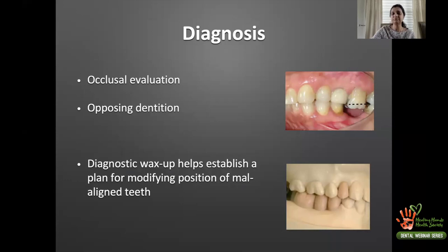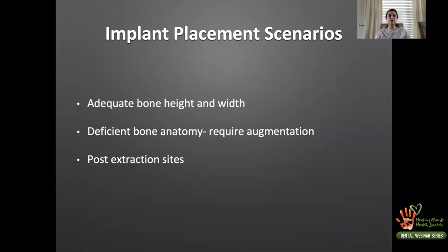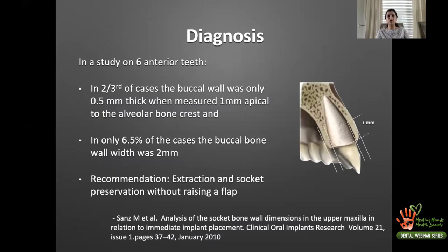Implant placement scenarios can be broadly categorized into three categories: those with adequate bone height and width — the simple, straightforward cases; those with some deficiency requiring augmentation; and post-extraction sites. You can broadly divide patients into these three categories based on whether they have adequate bone, inadequate bone, or present with a post-extraction site.